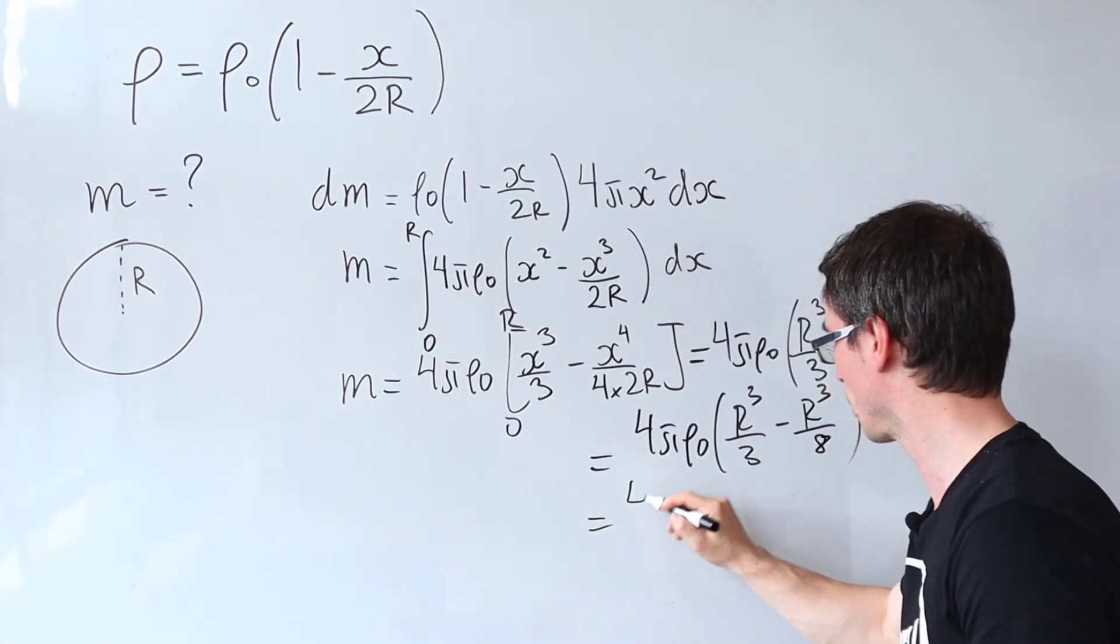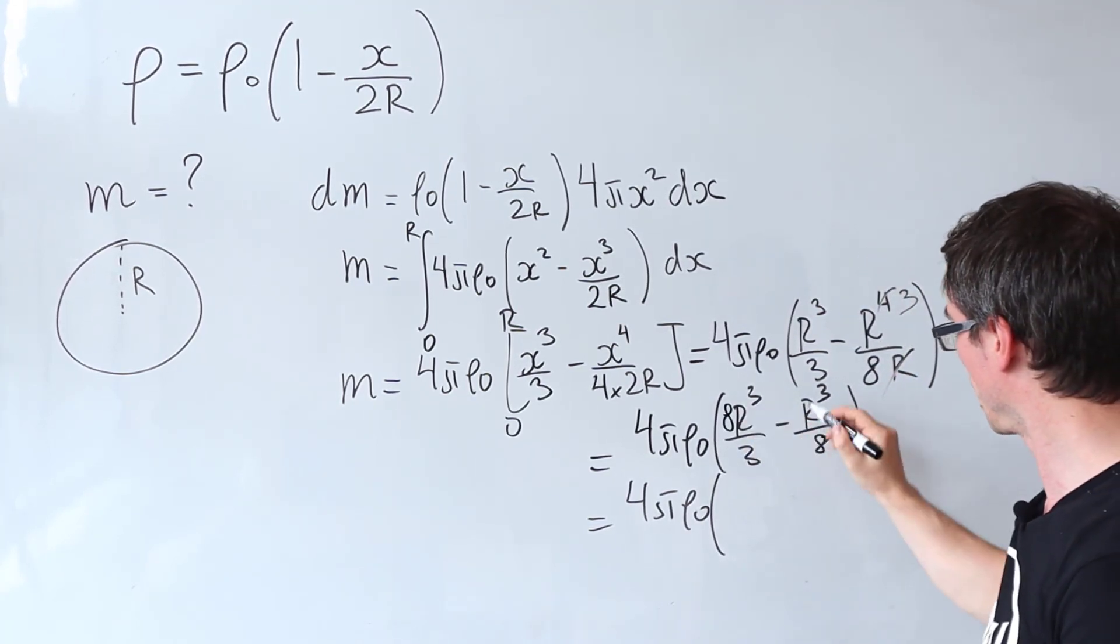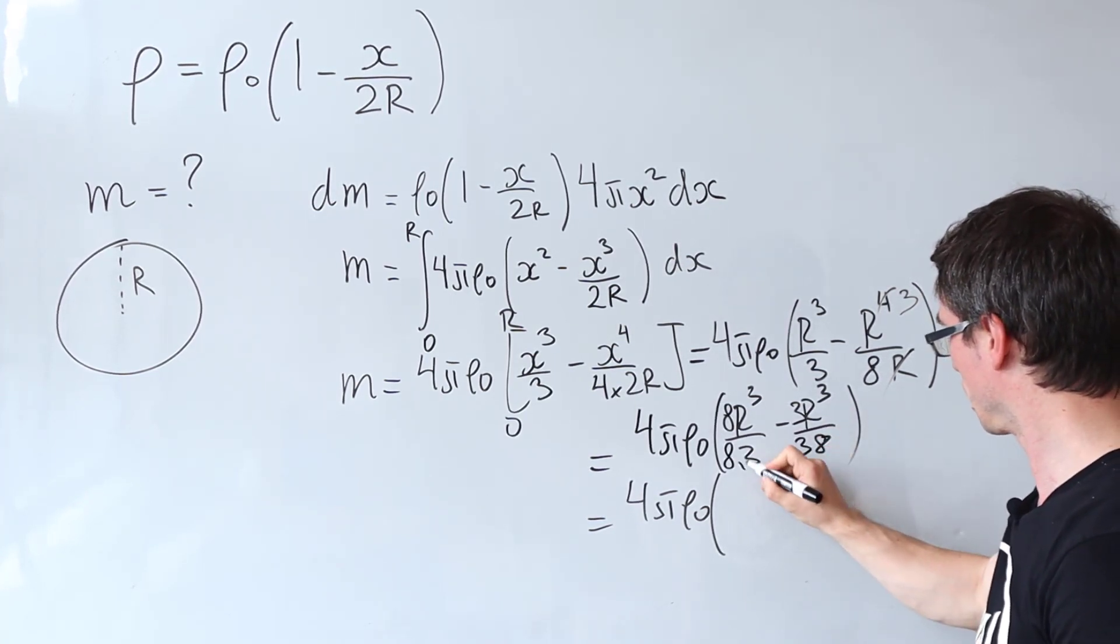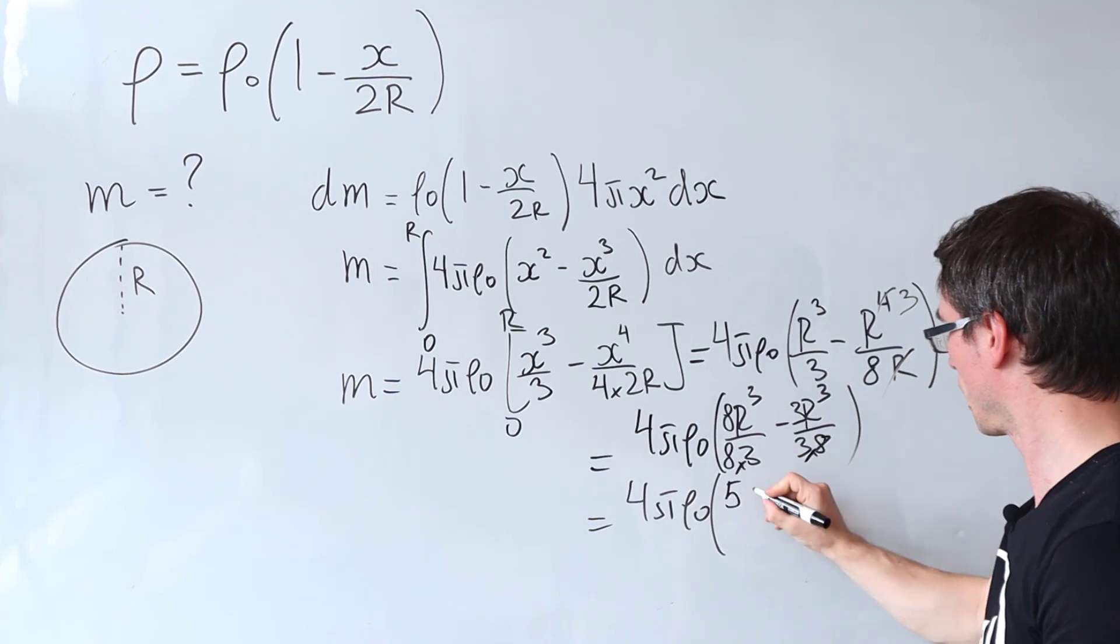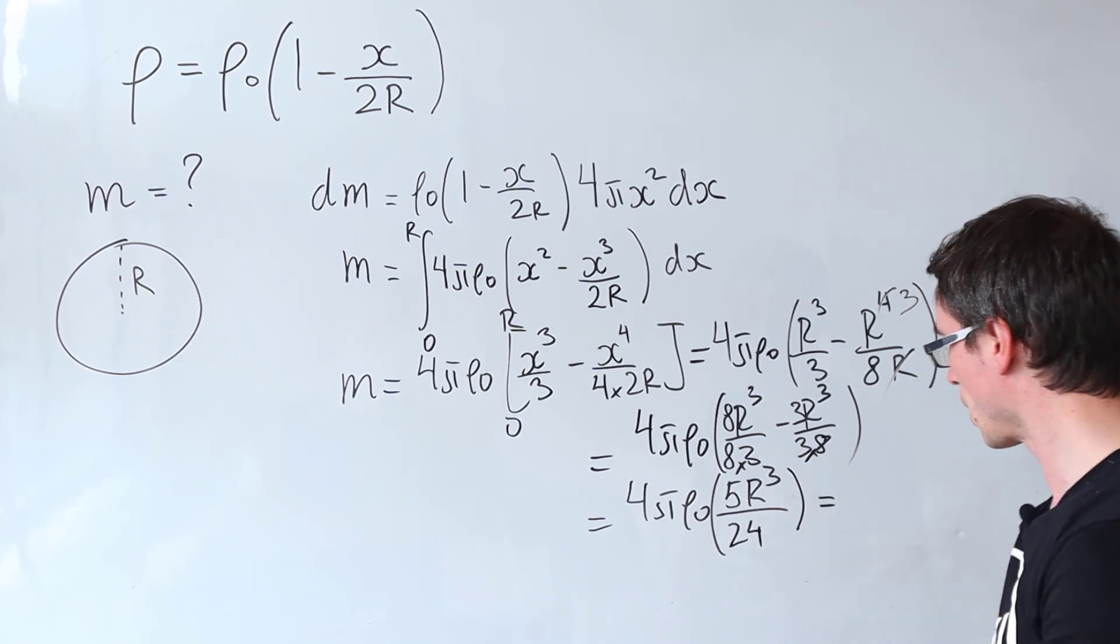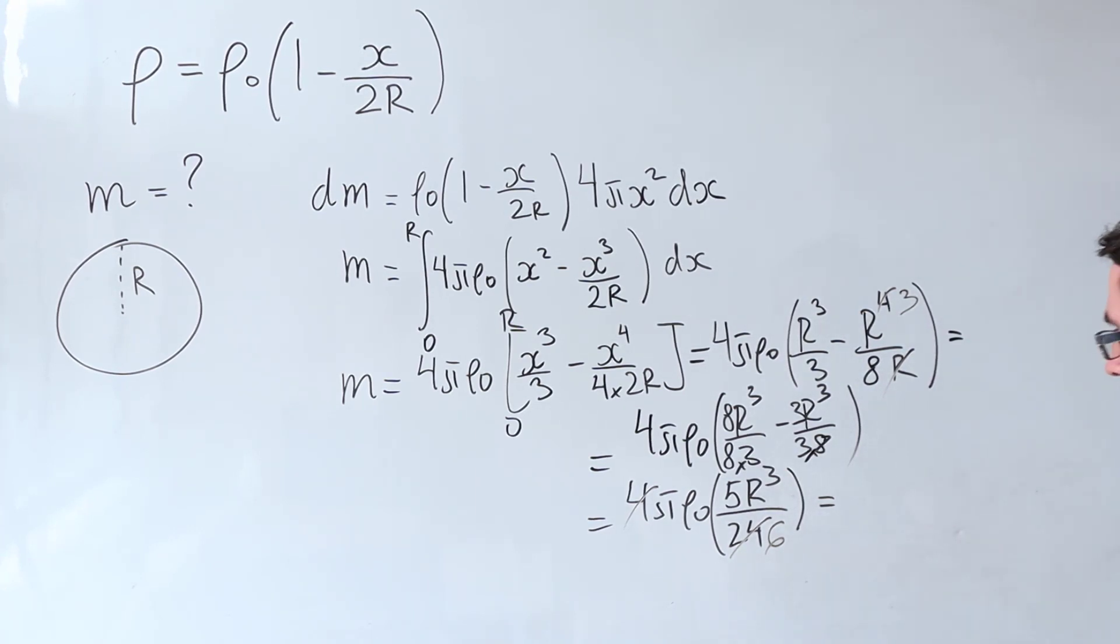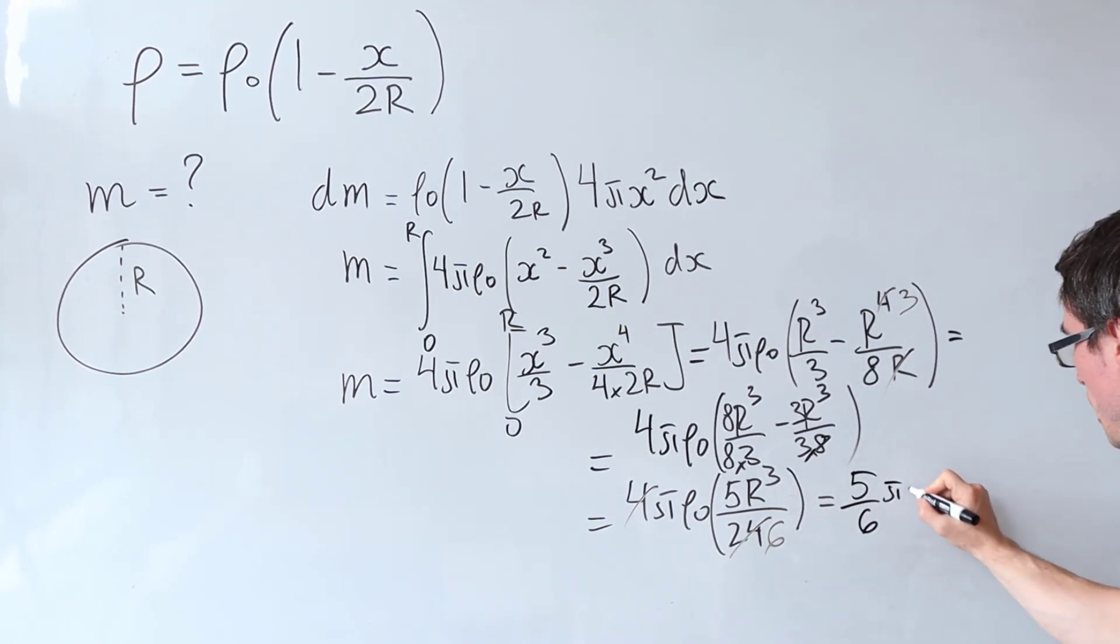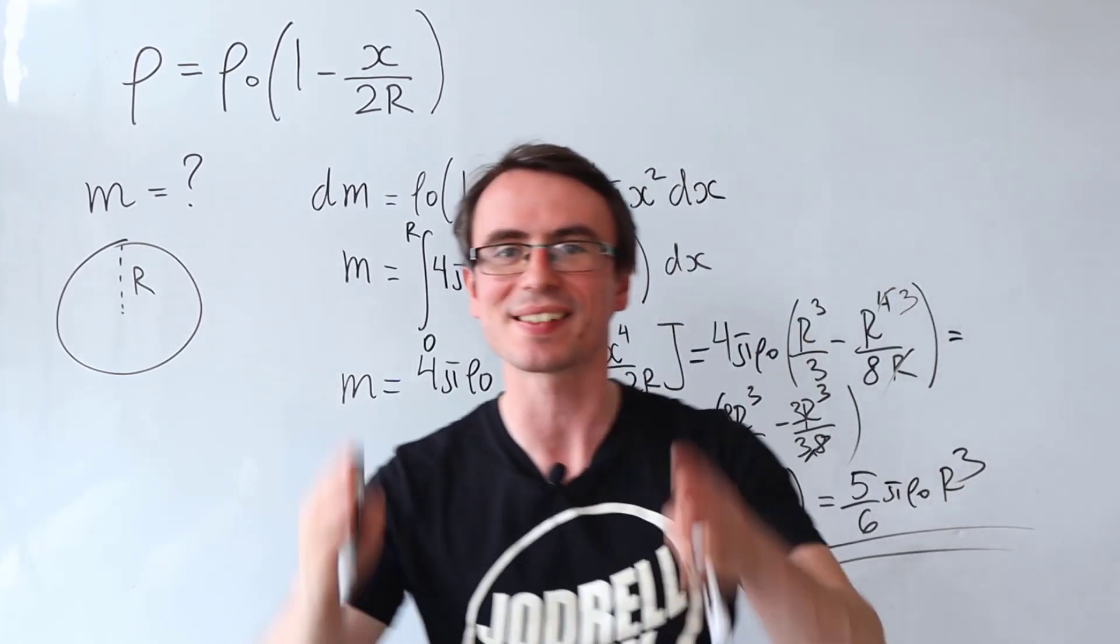4πρ₀ and then I'm going to have r³/3 take away r³/8. Let's put those under a common denominator. So what we're left with is 4πρ₀. Okay so this fraction I'm going to multiply by 8 this one by 3. So 8 here and then 3 here with some multiplication signs. So what I'm going to get is 5r³ divided by 8 times 3 which is 24. Okay the 4 is going to cancel with a 24 leaving me a 6. And what I'm left with is 5/6 πρ₀r³ and the correct answer is b.